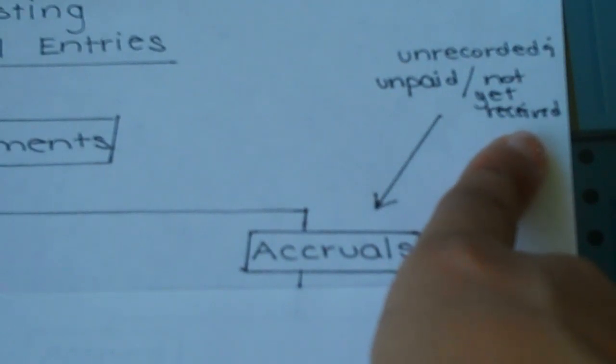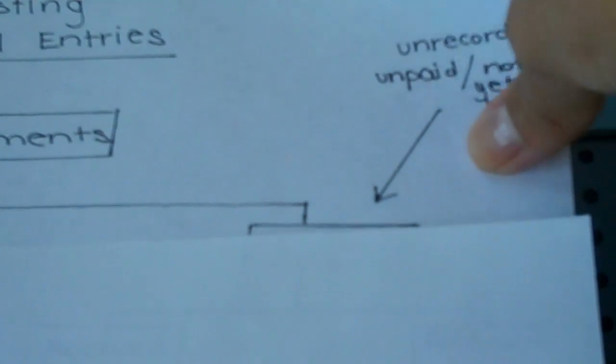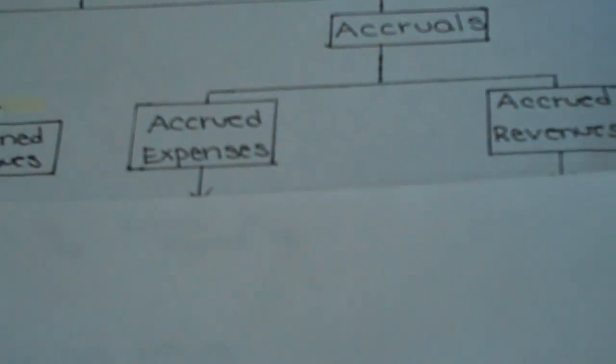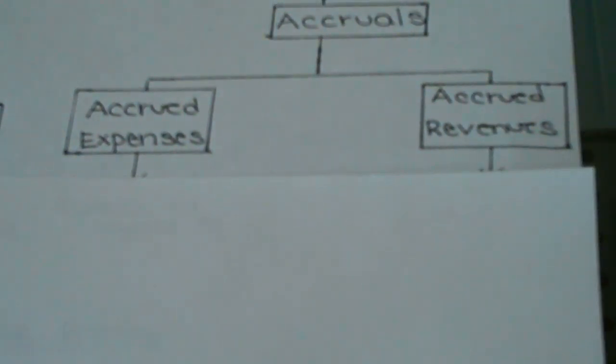And if we haven't billed them, they probably have not paid us yet, so it's not yet received. Again, examples of the two accrued items are accrued expenses and accrued revenues.